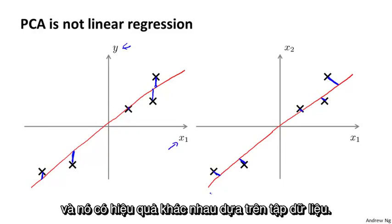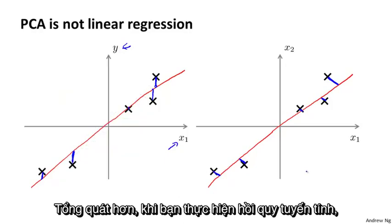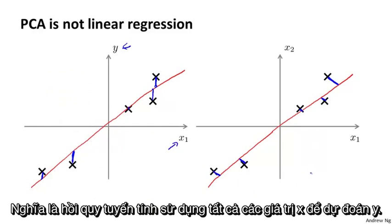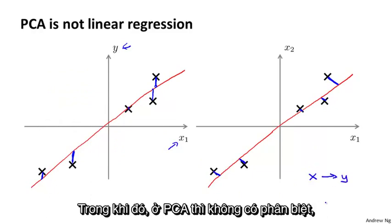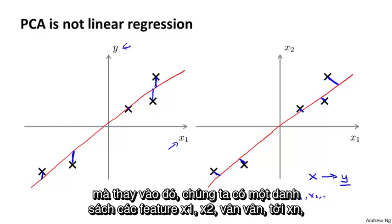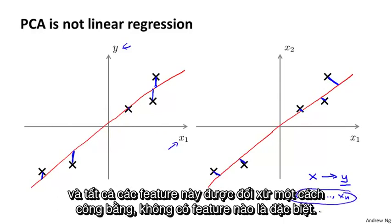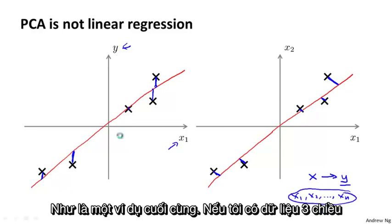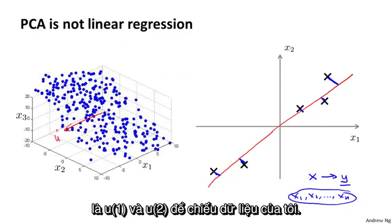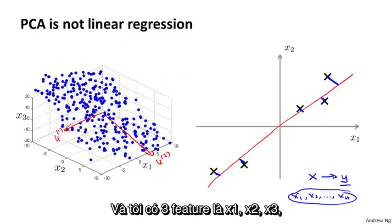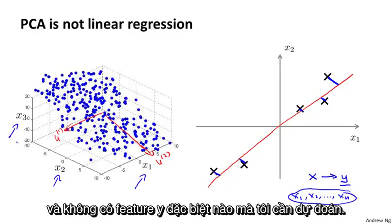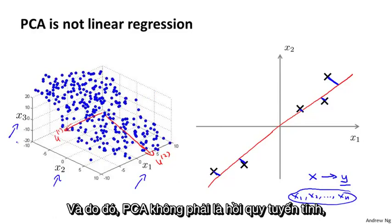This gives very different effects depending on the data set. More generally, in linear regression there is a distinguished variable y that we're trying to predict — we take all values of x and use them to predict y. Whereas in PCA, there is no special variable y. Instead we have a list of features x1, x2, up to xn, and all of these features are treated equally. As a last example, if I have three-dimensional data and want to reduce it to 2D, I find two directions u1 and u2, with three features x1, x2, x3 all treated symmetrically. There's no special variable y to predict. So PCA is not linear regression — even though at a cosmetic level they might look related, these are actually very different algorithms.